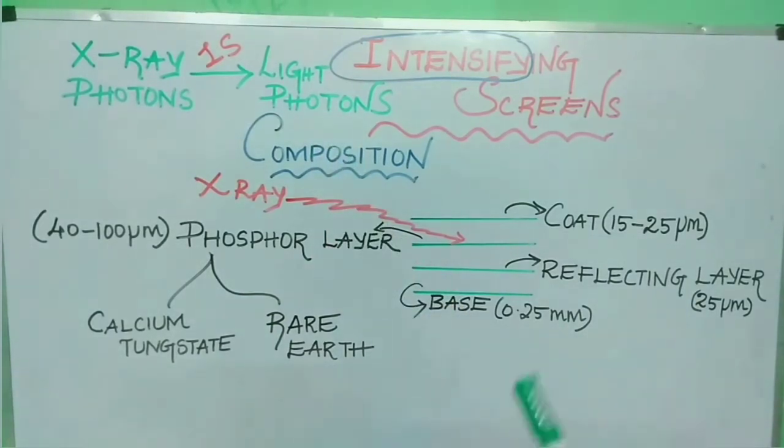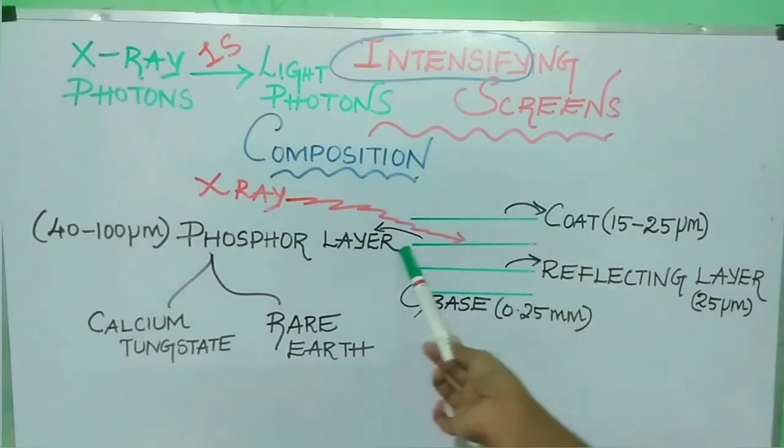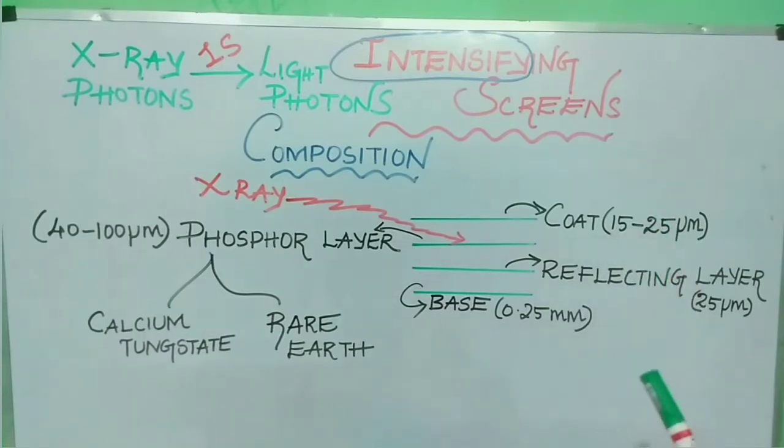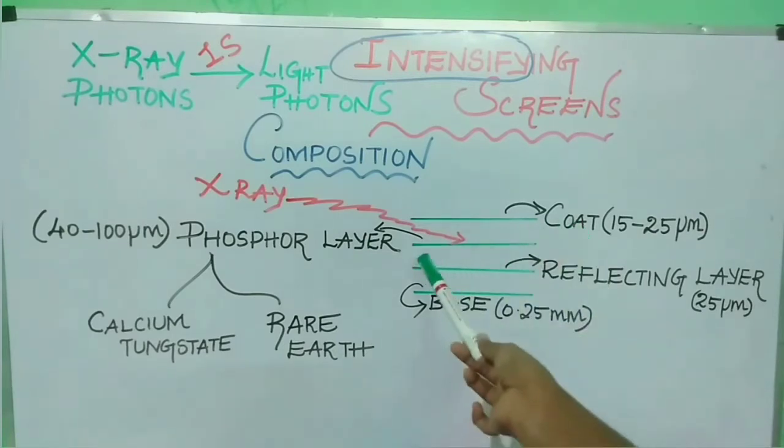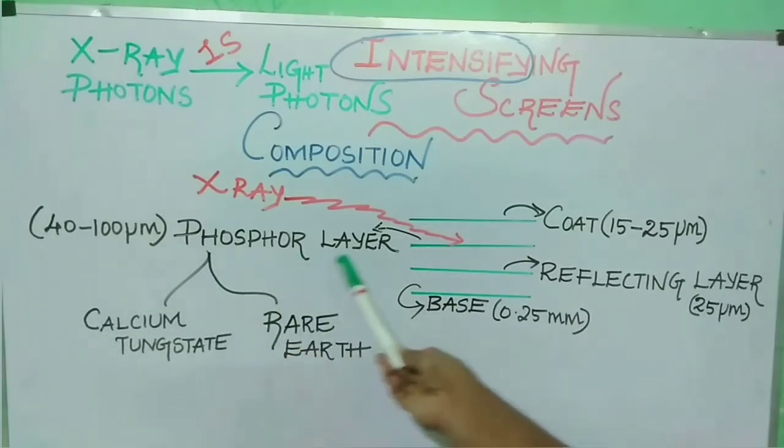Now let's study about the components of an intensifying screen. It has coat, phosphor layer, reflecting layer and base. This coat is about 15 to 25 micrometers in size and protects the phosphor layer from mechanical insults. This coat is made up of plastic, largely composed of cellulose. Cellulose is a wood-based bioplastic made from trees and can be mixed with a polymer.